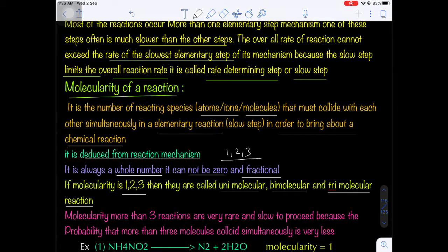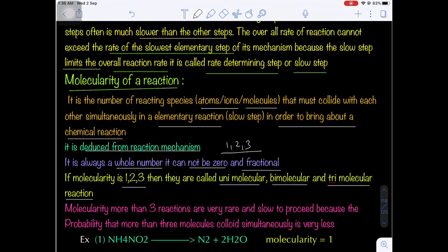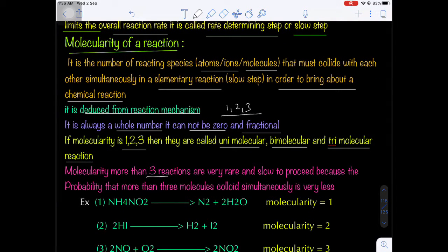Molecularity greater than 3 reactions are very rare because the probability of more than three molecules colliding simultaneously is very difficult. SN2 is bimolecular, SN1 is unimolecular, E2 is bimolecular elimination, and E1 is unimolecular elimination. Reactions with molecularity greater than 3 are perceived very difficultly because of low probability of simultaneous collision.